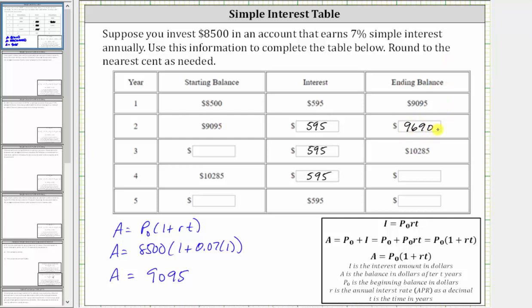The ending balance for year two is the beginning balance for year three. Again, the interest is still $595, and therefore the ending balance, which is given to us, is $9,690 plus $595, which is $10,285.